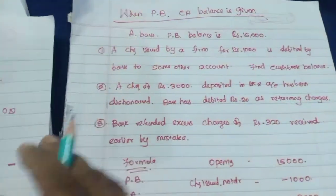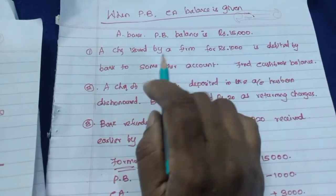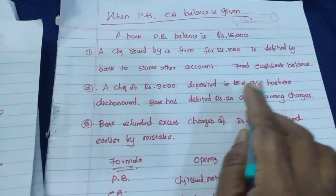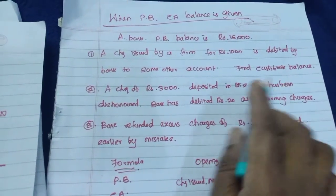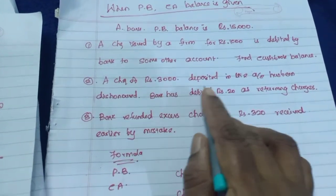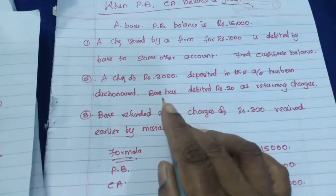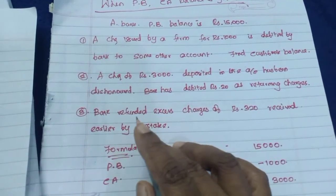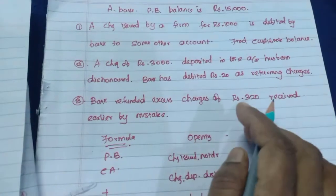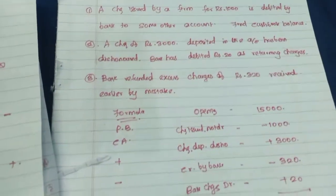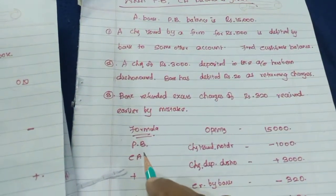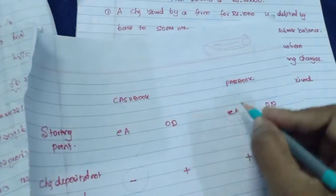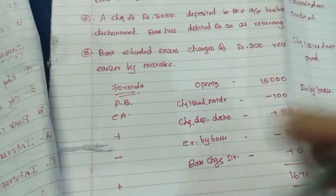The particulars given are: bank passbook balance is Rs. 15,000. A check issued by the firm for Rs. 1,000 is debited by the bank to some other account. Find the cashbook balance. A check of Rs. 3,000 deposited in the account has been dishonored. The bank has debited Rs. 20 as returning charges. The bank refunded excess charges of Rs. 320 received earlier by mistake. Since passbook current account balance is given, we use the passbook current account formula: plus, minus, plus, minus.